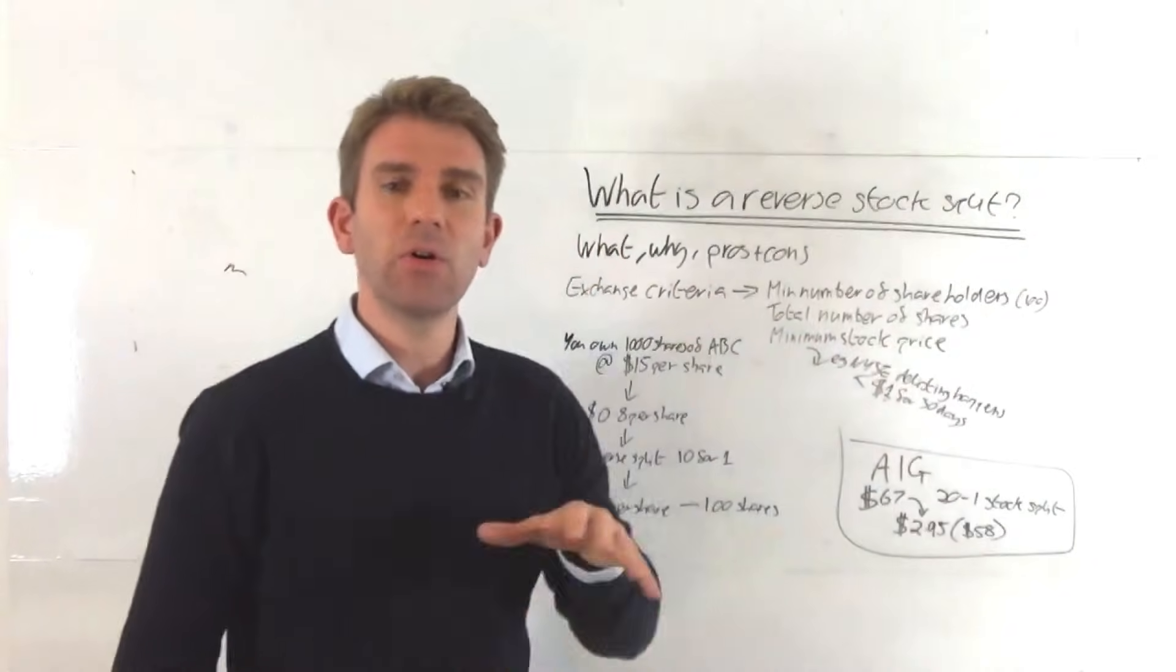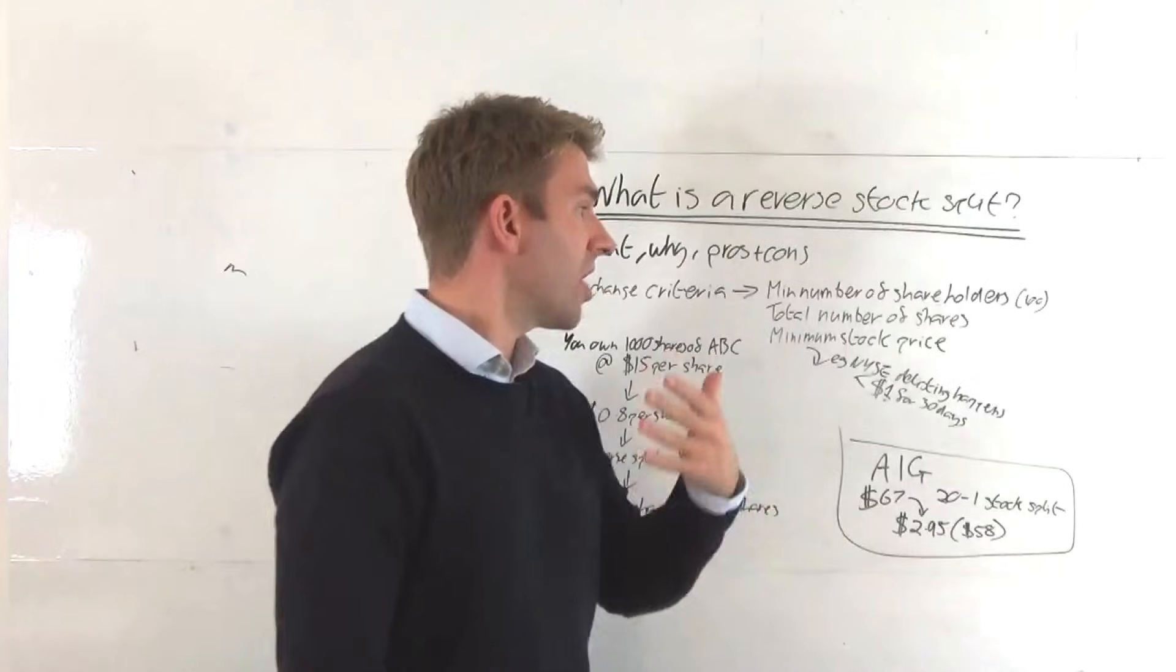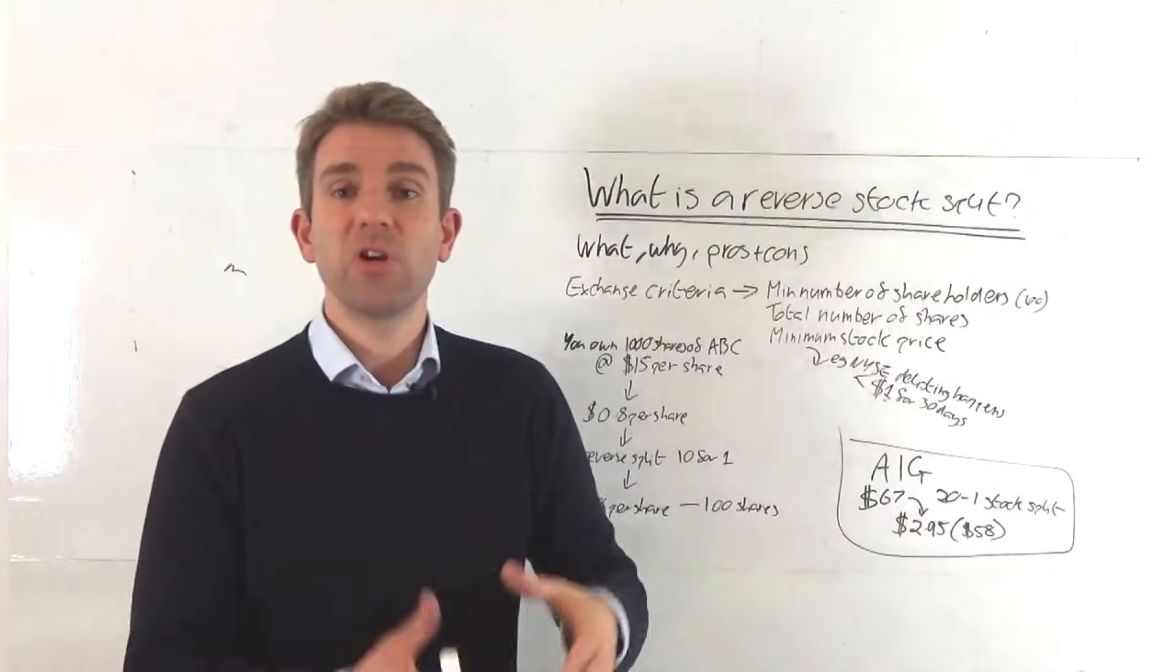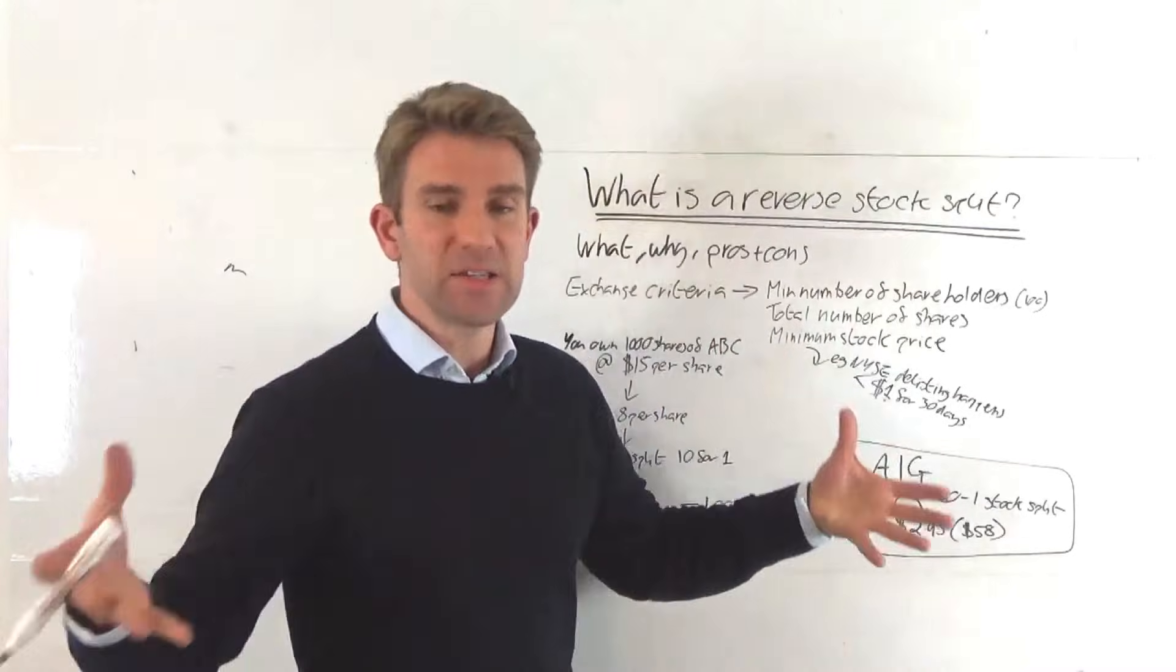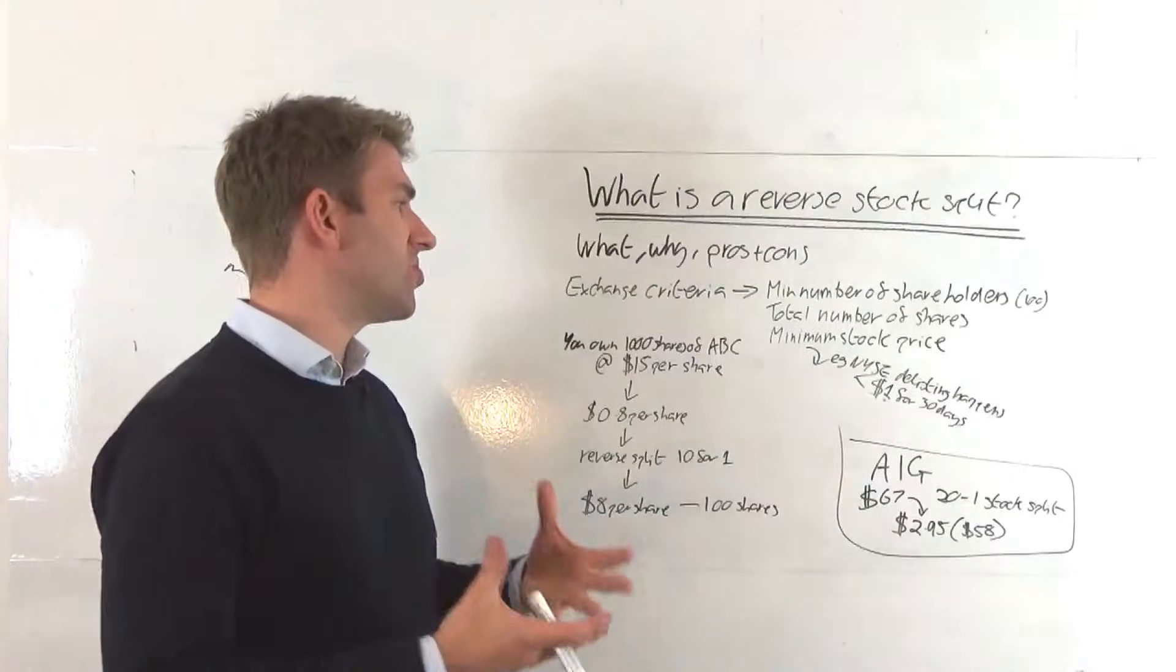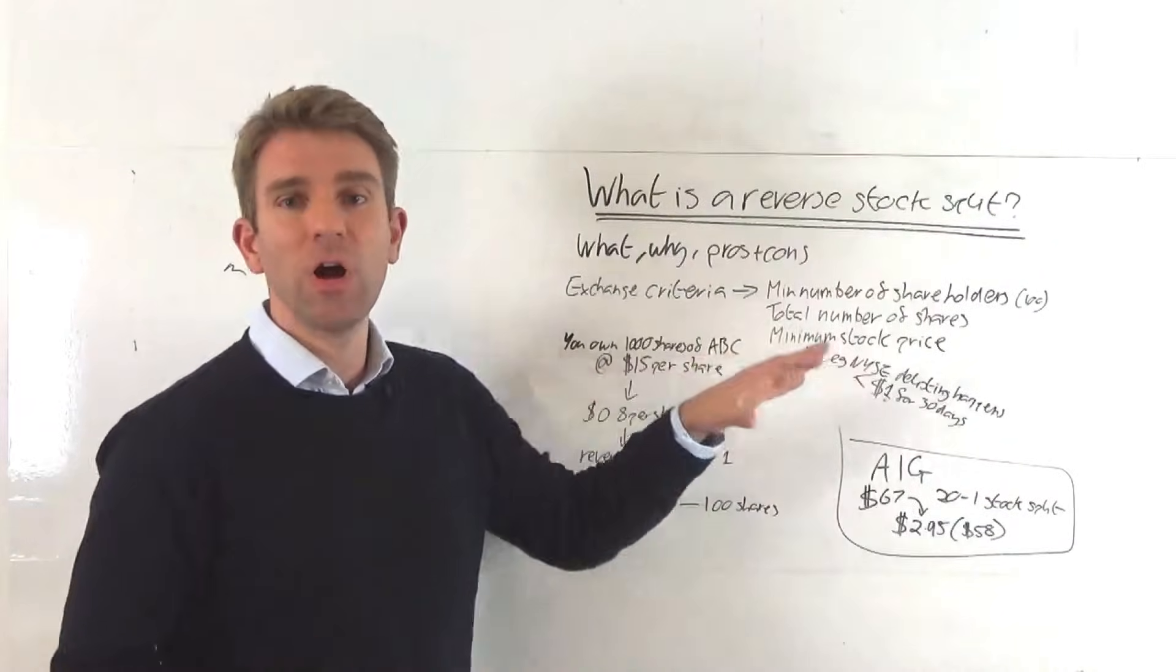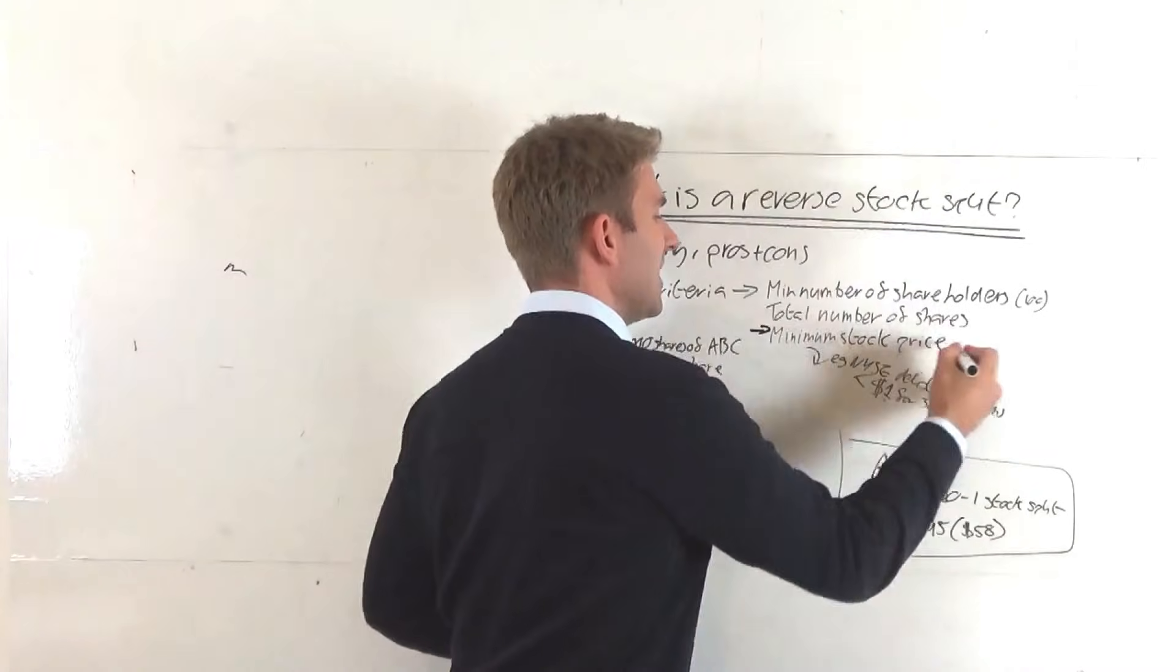To be listed on an exchange, you have specific criteria that you must meet. Among others, you have to have a minimum number of shareholders and 100 share batches. So you can't have just one or two that hold all the shares. You've got to have a decent amount. They've got to hold a decent number of shares each, minimum of 100 shares. A total number of shares have to be a certain criteria, certain amount as well. And then you've got a minimum stock price, and that's the big one really that we're looking at in this video as to why potentially companies will do a reverse stock split. We've got a minimum stock price that you have to maintain.